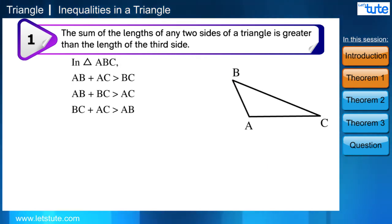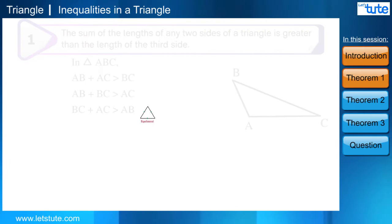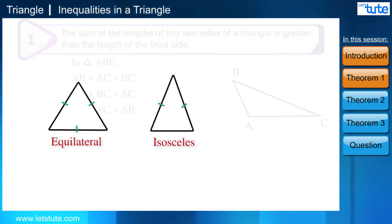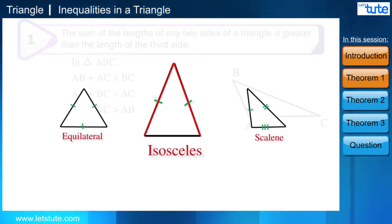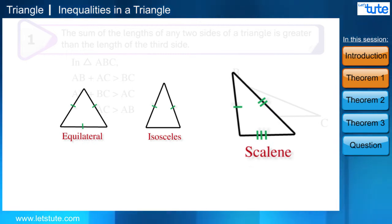We all know that there are three types of triangles: equilateral triangle, isosceles triangle, and scalene triangle. An equilateral triangle has all three sides and three angles equal. Isosceles triangle has two equal sides and the angles opposite to these equal sides are also equal. And in the case of scalene triangle, all the sides and angles are unequal.